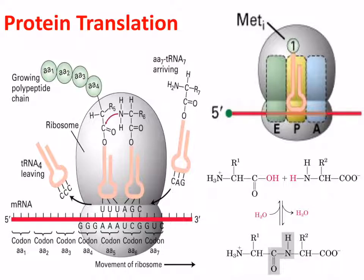There are three main positions on the ribosome. The A site, where the tRNA arrives with the specific amino acid. The P site, where it's processed and chemically bonded via a peptide bond to the neighbouring amino acid. And then the E, the exit site, where it leaves once it's finished transferring the amino acid.